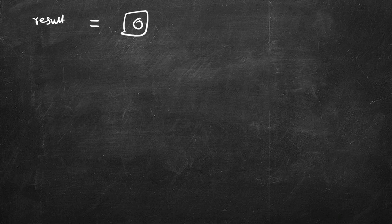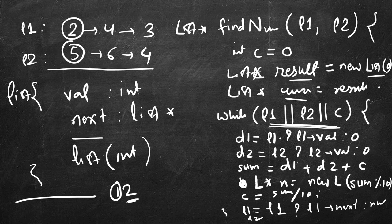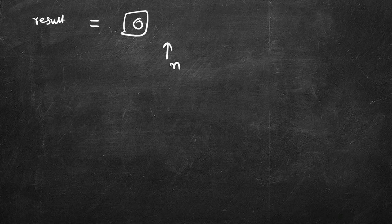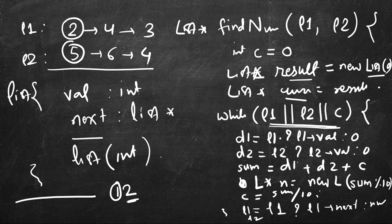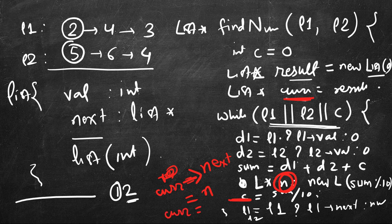We had initialized result to a dummy node with value 0, and we create new nodes with value sum % 10, adding them as the next of the current node. So current->next = n, and then we advance current = n.